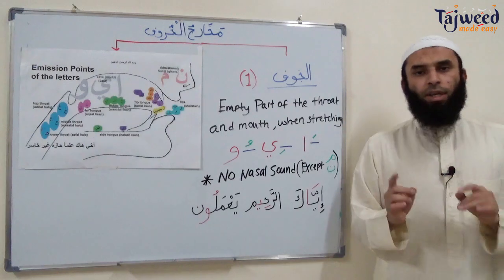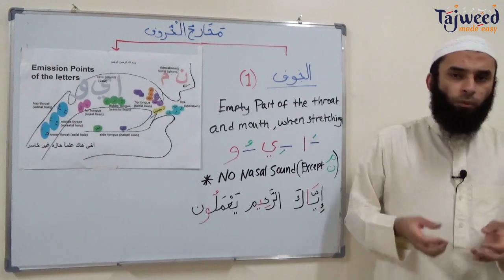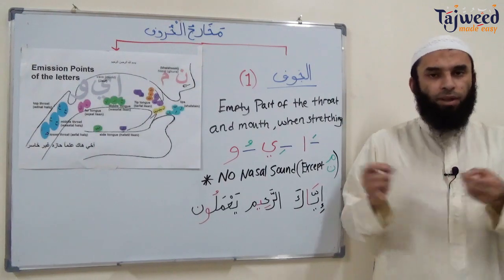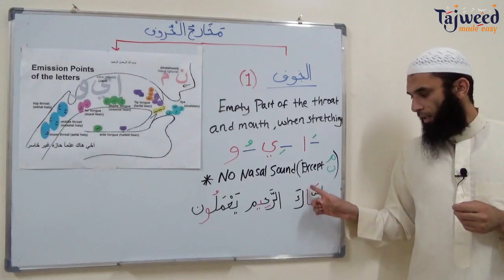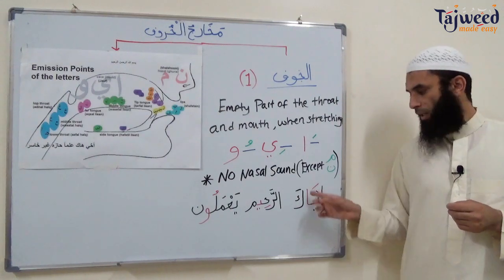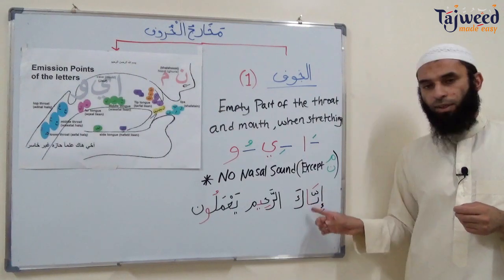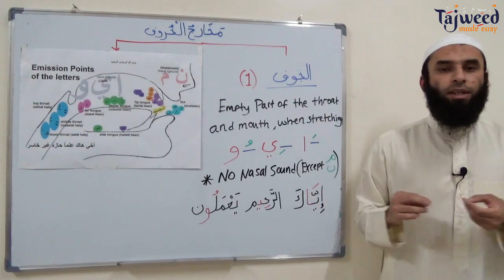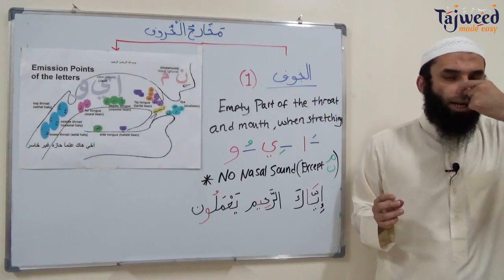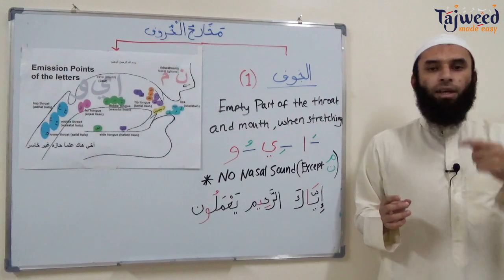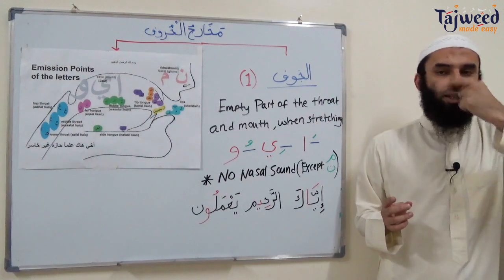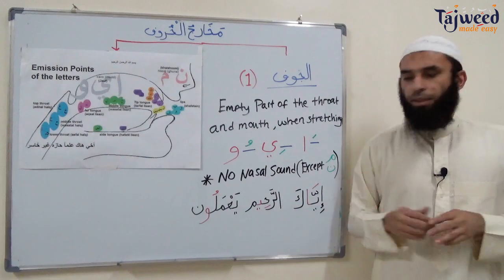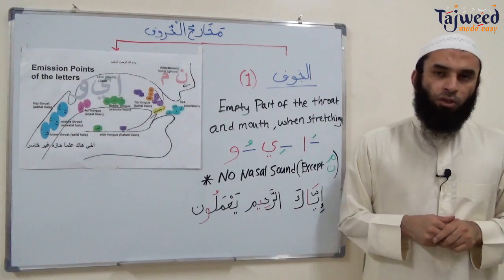Once we're able to do it without a sound, try it with words that have that letter. For إِيَّاكَ — this word has a يَاء with a previous كَسْرَة — so try: إِيَّاكَ, not إِيَّاكَ with nasalization. And الرَّحِيم — try it: الرَّحِيم. And يَعْمَلُونَ.